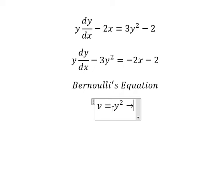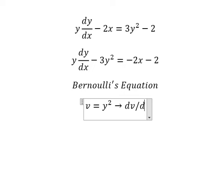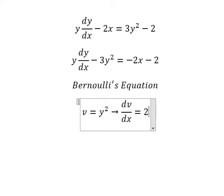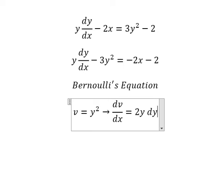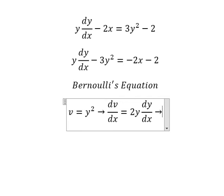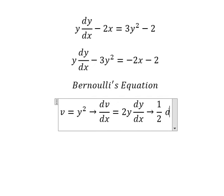We need to differentiate both sides first. We have dv/dx equal to 2y dy/dx. Because we don't have the number 2, we divide both sides by 2.